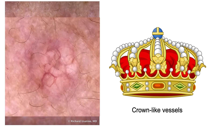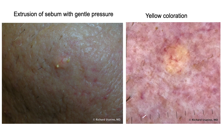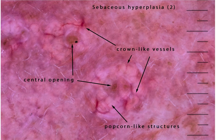We call them crown-like vessels or crown vessels because they don't cross the midline — they come to the middle and end right there. Here it is more close up, showing these nice crown vessels and popcorn-like structures. The popcorn represents the hyperplastic sebaceous glands, which contain a lot of lipid. One way to remember it is it's like buttered popcorn — the buttered lipid on the popcorn. If we press on some of these, they may extrude sebum with gentle pressure, and we may even see some yellow coloration due to the sebum.